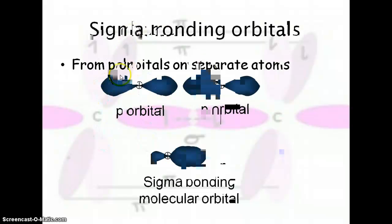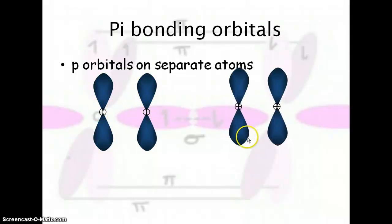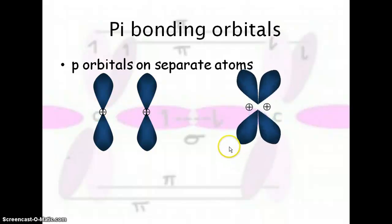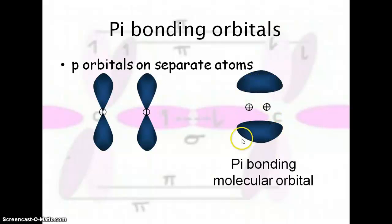Now let's look at pi bonding. Pi bonding is going to occur above and below the atoms. The little dot in the middle represents the atoms themselves. When they come together and combine, they actually form these hybridized p orbitals — these are the pi bonding molecular orbitals.